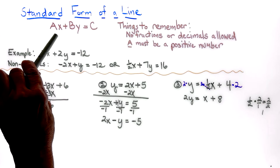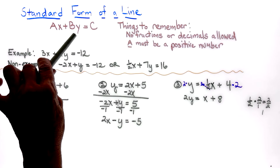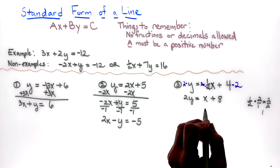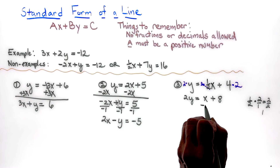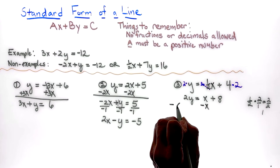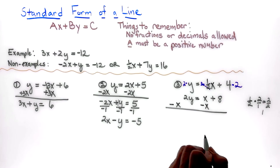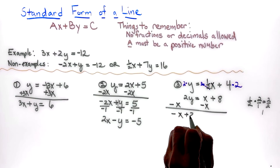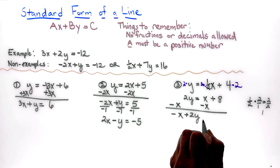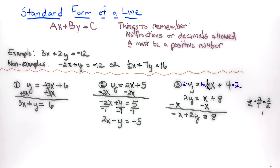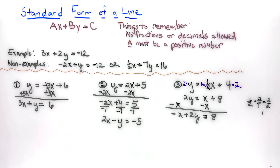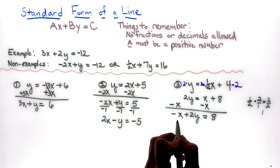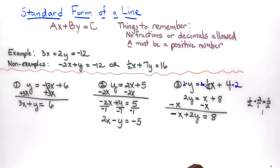There's still something wrong — x belongs in the front as Ax plus By equals C. So I bring x to the other side of the equation, giving negative x plus 2y equals 8. They're all whole numbers now — no decimals — but there's a negative in front of x.